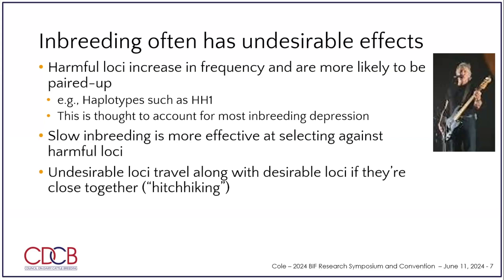If you're going slowly, that can help because when you increase inbreeding levels slowly you can purge those alleles — remove those harmful alleles from the population. But when you're going really fast you don't always leave enough time to push the harmful alleles out and keep the good ones. The value of inbreeding is that it lets us gather all the best loci together in the population. The challenge is there can be a physical connection between a favorable allele and an unfavorable allele — a bad allele can get dragged along with a good allele. We call that hitchhiking.